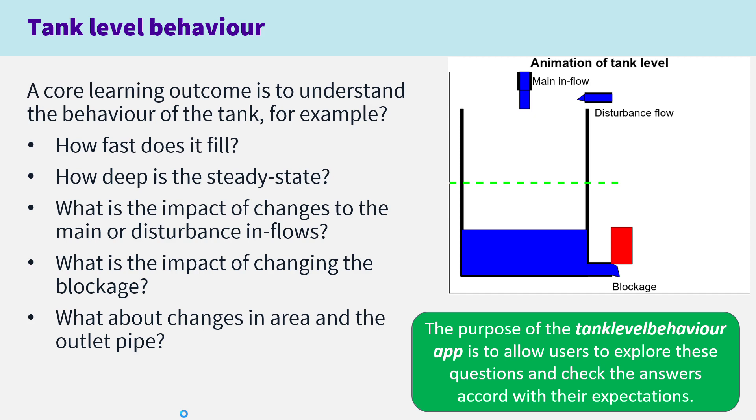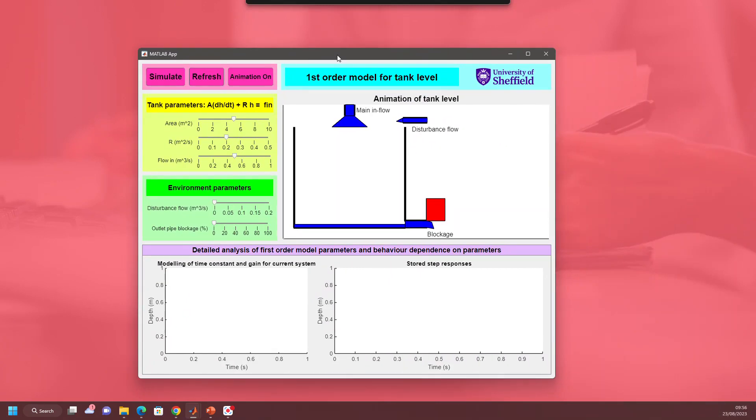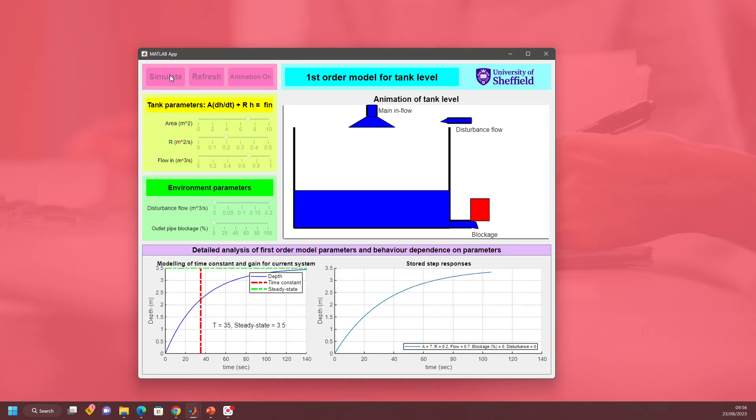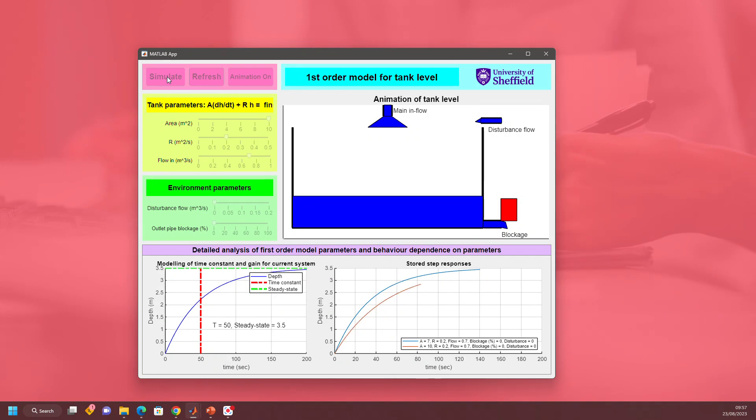Let's do a live demonstration. I can set parameters and change the area - you'll see the tank changes as I change the area. I can change the size of the outlet pipe and the size of the flow with these sliders. When I press simulate, you'll see the tank beginning to fill and the graph at the bottom showing how the depth has changed. Let's change the area from seven to ten and simulate again.